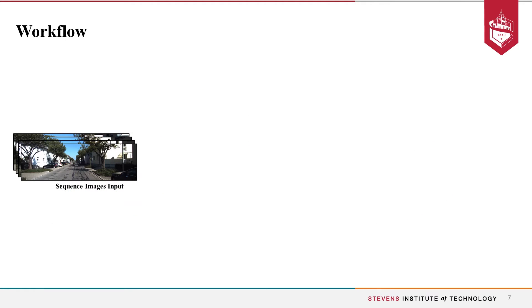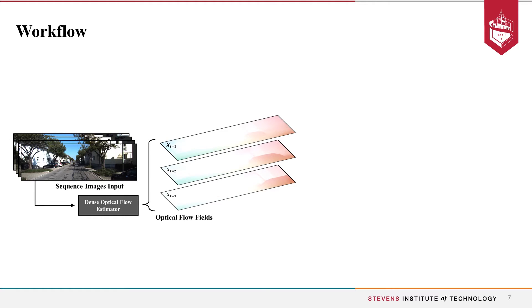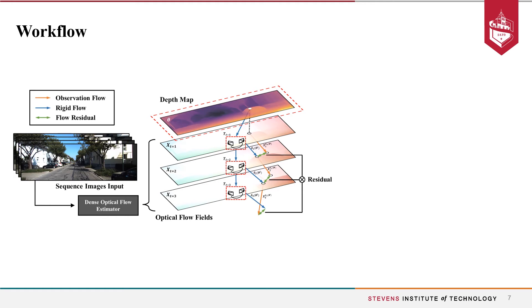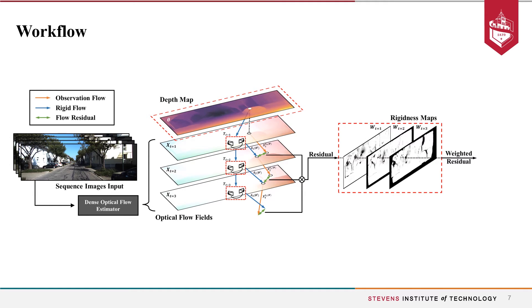The overall workflow of our method is, with a given video sequence input, we first send them to a dense optical flow estimator to get the optical flow field sequence. Then, the objective of our framework is to minimize the difference between the observed optical flow and the rigid flow obtained by warping the depth field with camera poses. Next, residues are weighted by the rigidness maps where pixels belong to occlusion, outliers, or moving objects are down-weighted in our visual odometry estimation.